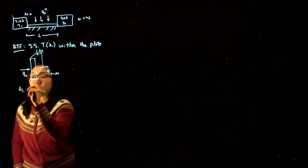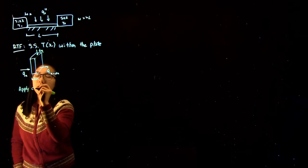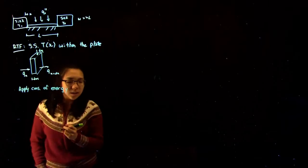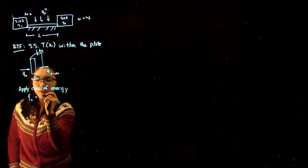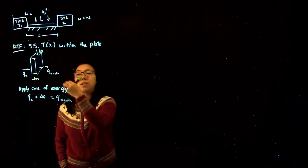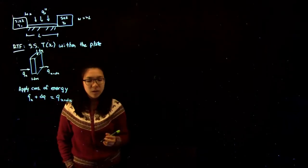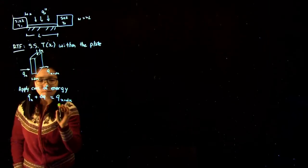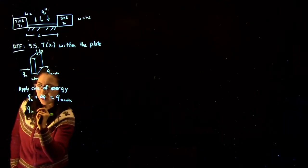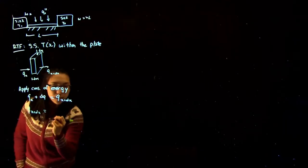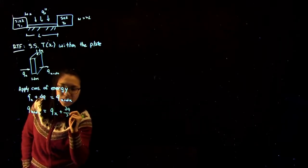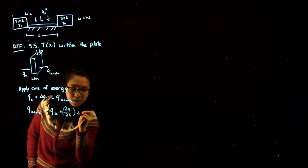If we apply the conservation of energy balance, we can say that Qx plus dq is equal to Qx plus dx, which is simply that whatever flows in has to flow out. If we consider Qx plus dx to be a first-order Taylor series approximation, we get that Qx plus dx is equal to Qx plus dQ/dx times dx.